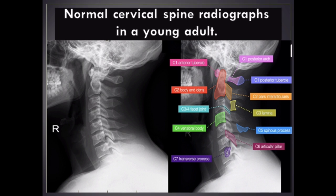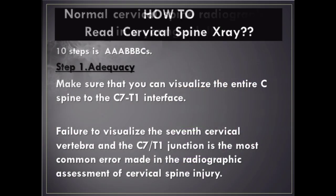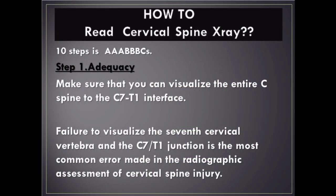Step 1 – Adequacy: Make sure that you can visualize the entire C-spine to the C7/T1 interface. Failure to visualize the seventh cervical vertebra and the C7/T1 junction is the most common error made in the radiographic assessment of cervical spine injury.